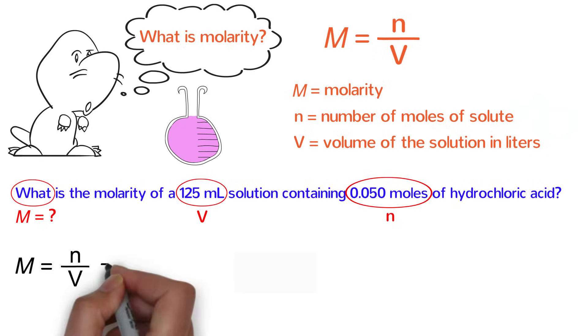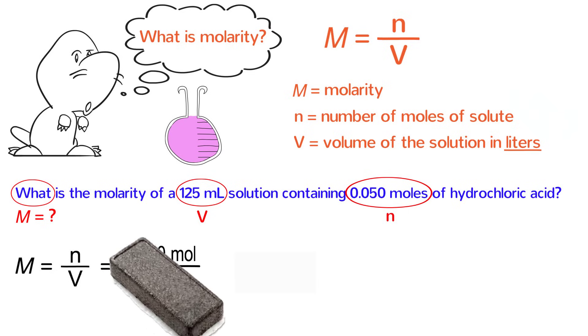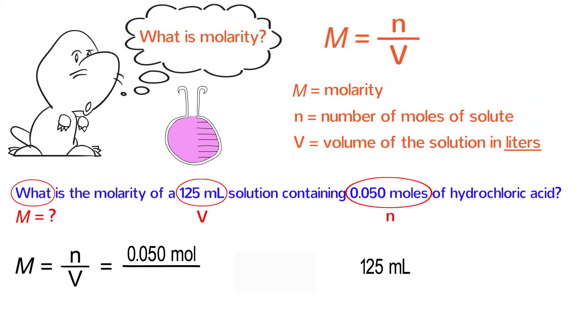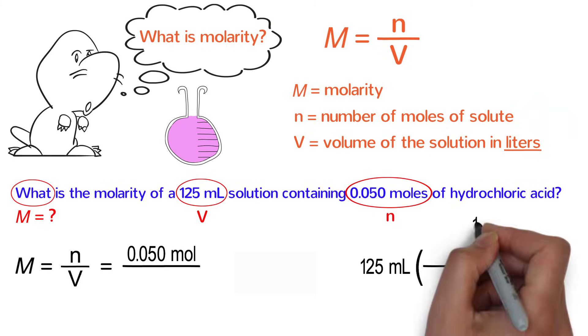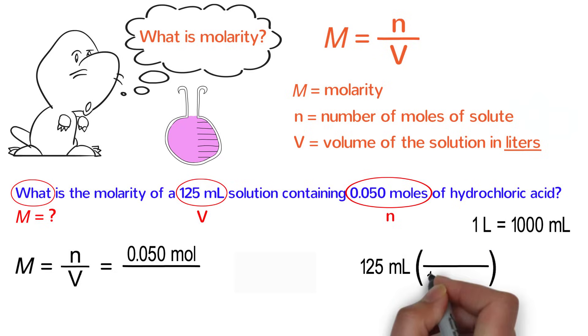Substitute 0.05 moles in for N and divide that by the volume. You may be tempted to write 125 milliliters in the denominator, but that would be incorrect, because V should be the volume in liters, not milliliters. In order to convert 125 milliliters to liters, you can multiply it by conversion factor fraction. Because 1 liter equals 1000 milliliters, we put 1000 milliliters on the bottom and 1 liter on the top. The volume works out to be 0.125 liters. However, because we are dealing with metric prefixes, we could have done the conversion simply by moving the decimal point according to the prefix. For milli, just move the decimal point three spots to the left.